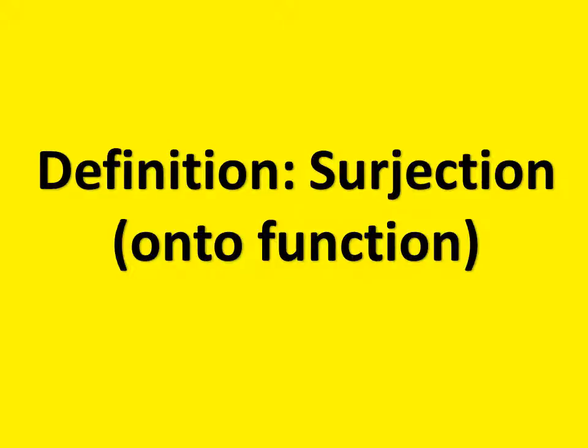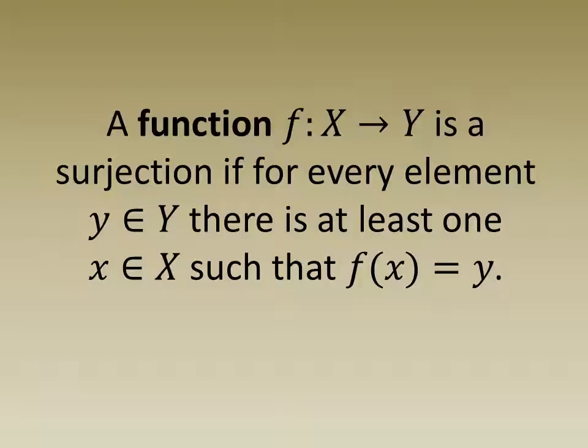A function f from the set X into the set Y is a surjection if for every element y in the codomain there is at least one element x in the domain such that f(x) equals y.